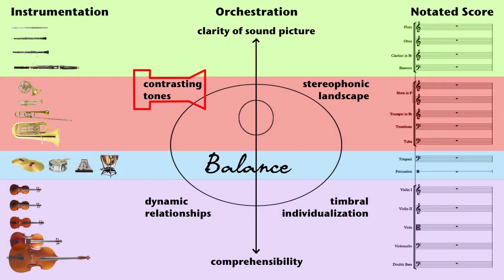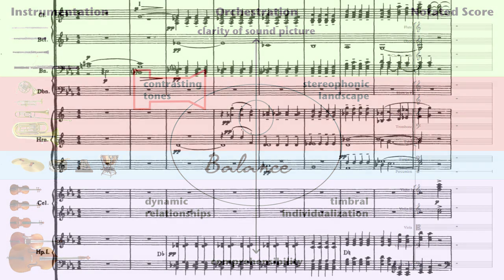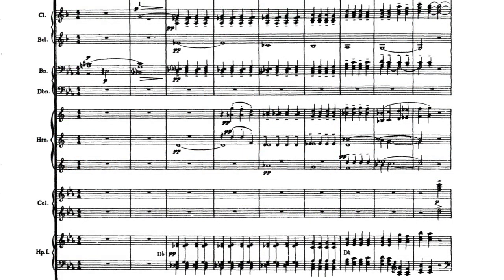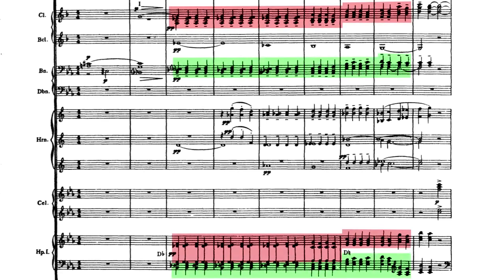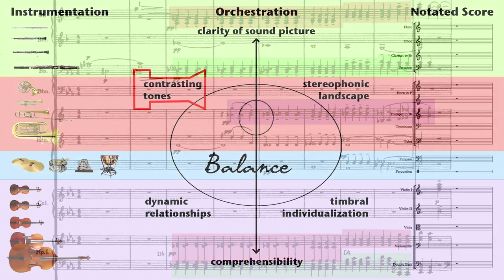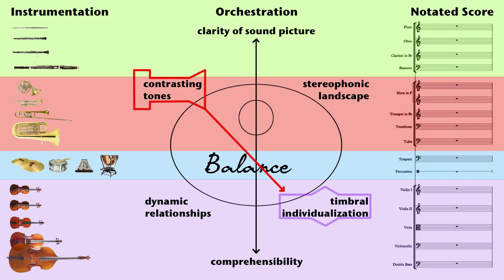Contrasts of tone are every bit as important as dynamics in balancing a score. Once again, here's a topic that could have a whole book written about it. An orchestrator may need to balance the quality of a sound as much as its quantity. Here's where one would decide whether to double or not to double, or in which register or section a motive should be placed. This topic has a direct relationship to its sister across the face of the clock: timbral individualization.